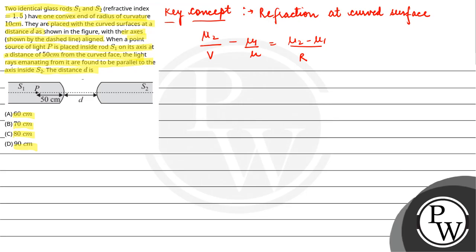According to the question, your light is from S1 which is glass rod to the air. That means mu1 is 1.5 and mu2 is 1, and the radius of curvature given is 10 cm. First of all, the point P is acting as a source.